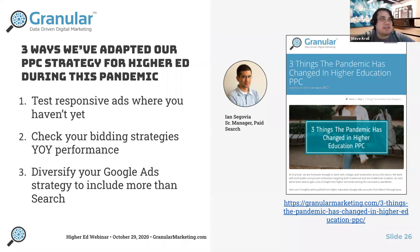In summary: test your responsive search ads, keep adding new assets, review your bidding strategies, and add more channels beyond just search. Granular will share the blog post link in the follow-up.